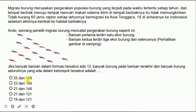Ada opsi pertama 25 dan 169, opsi kedua 23 dan 144, opsi ketiga 21 dan 144, opsi keempat 21 dan 121, atau opsi terakhir 19 dan 121. Berarti yang ditanyakan adalah baris terakhir yaitu baris ke-12, karena ada 12 baris atau 12 formasi. Ada berapa burung di baris ke-12 dan seluruhnya kalau dijumlahkan ada berapa — itulah yang ditanyakan dalam soal ini.